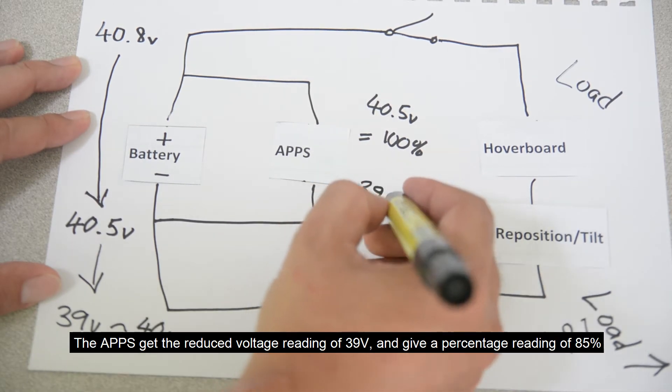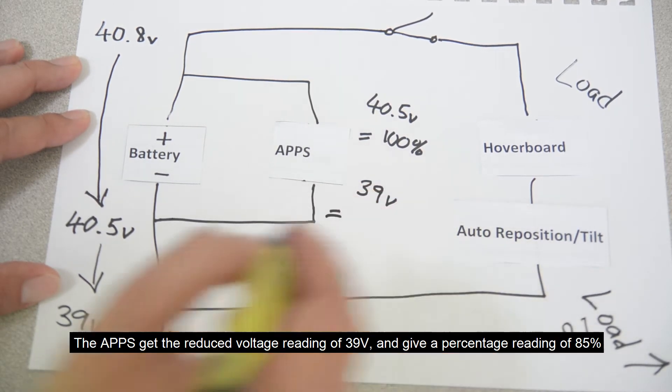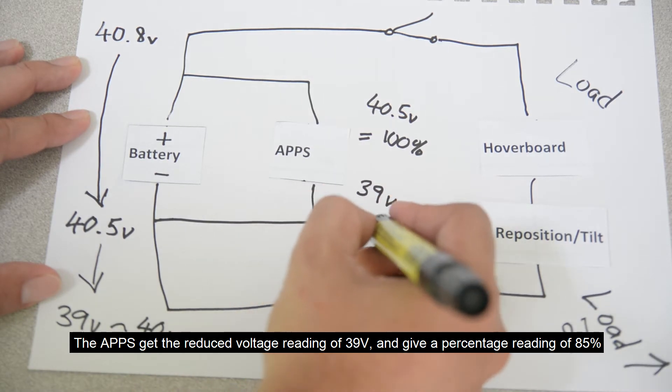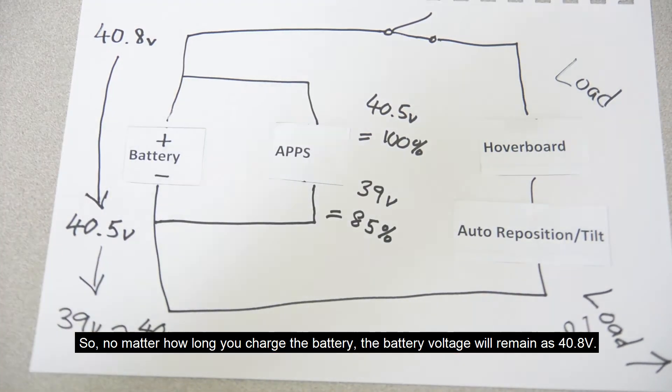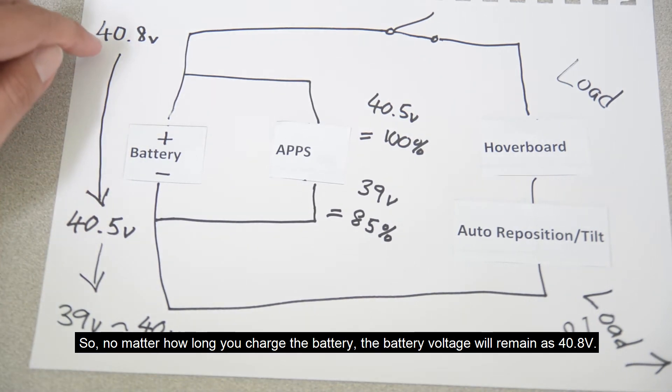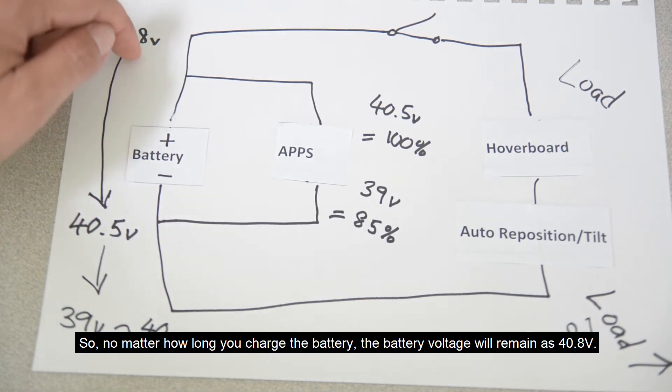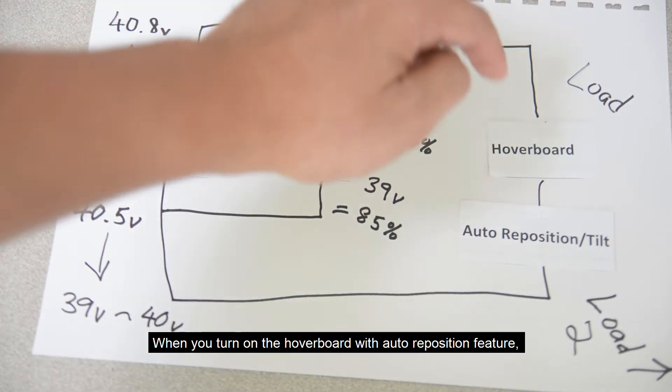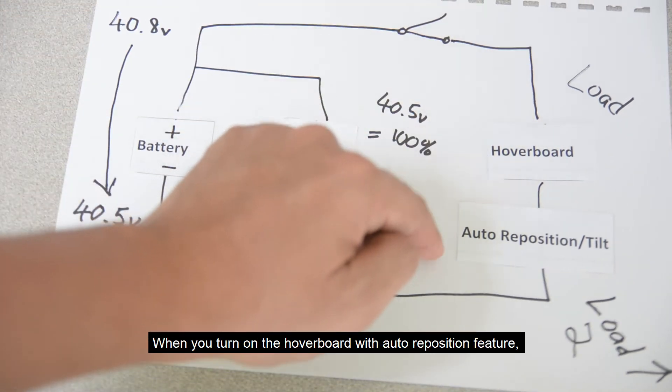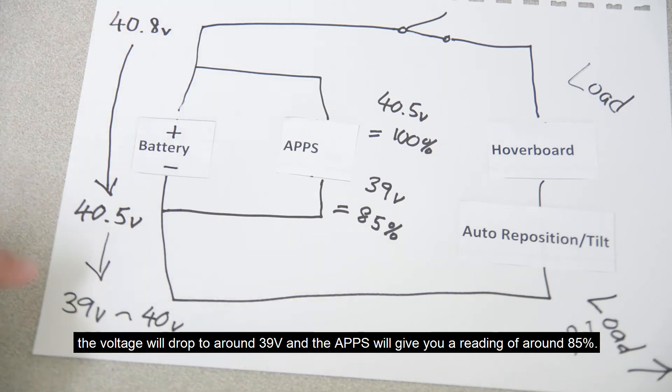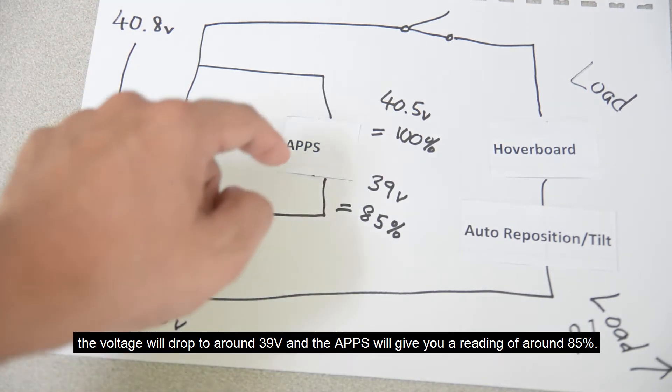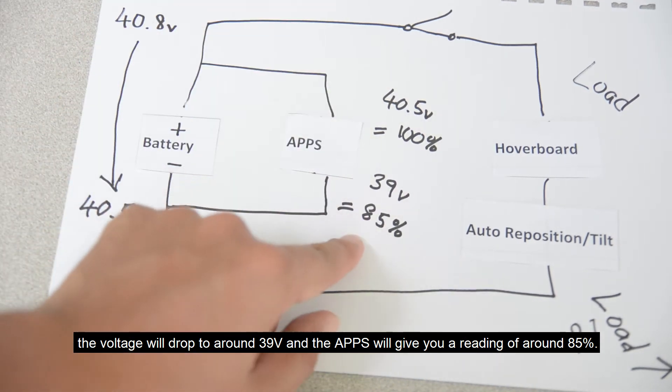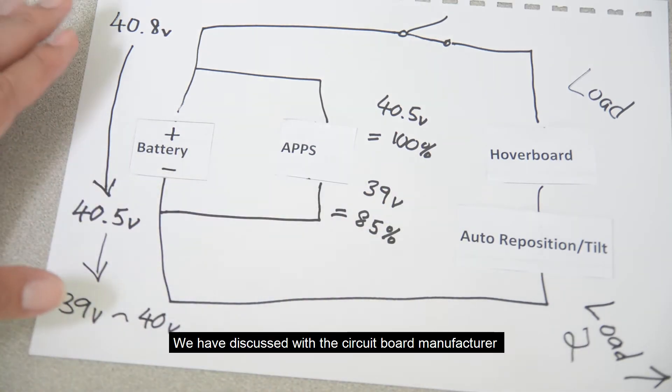The apps get the reduced voltage reading of 39V and give a percentage reading of 85%. So no matter how long you charge the battery, the battery voltage will remain as 40.8V. When you turn on the hoverboard with auto-reposition feature, the voltage will drop to around 39V and the apps will give you a reading of around 85%.